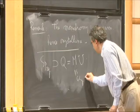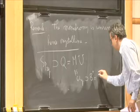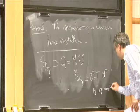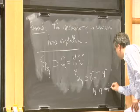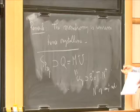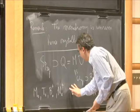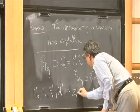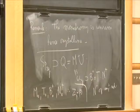Some notations before introducing the Igusa tower: in Sp2g, I denote by Q the Siegel parabolic, M the standard Levi, U the unipotent radical. M is isomorphic to GL_g. Inside M we have the upper triangular matrices T times N+, and N- is the opposite unipotent radical. We put 0 as index when we take Zp-points: M0, T0, B0+, N0+.